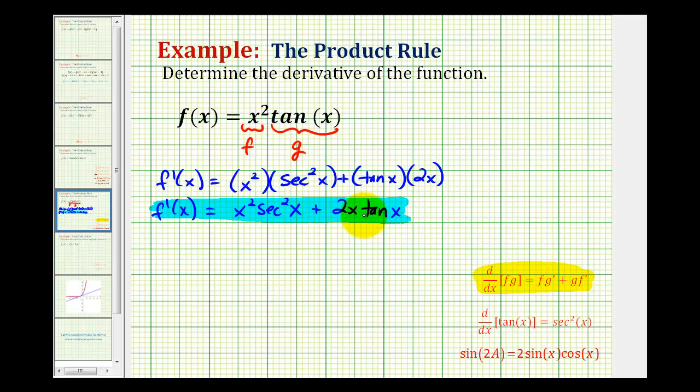Let's write everything in terms of sines and cosines. So f prime of x is equal to x squared over cosine squared x plus two x times sine x over cosine x.